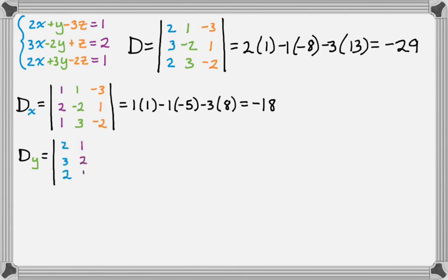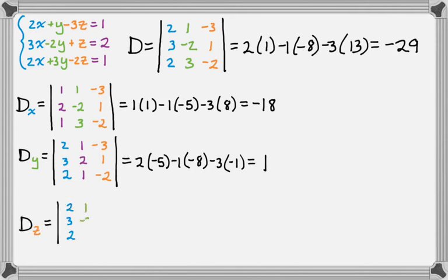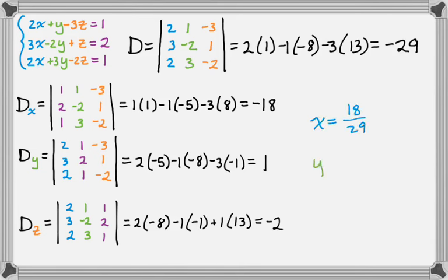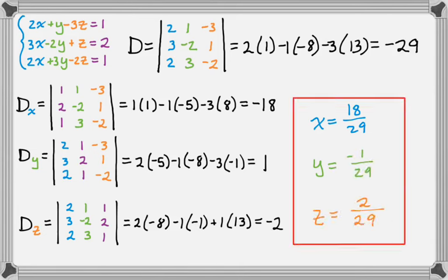D sub y. So I'm replacing the y column with the answers. And I get this. Expanding across the top row again. And then D sub z. So I'm going to replace the z column with the answers. And then expand across the top row to get this determinant. And then the solution is going to be x is D sub x over D, y is D sub y over D, and z is D sub z over D.